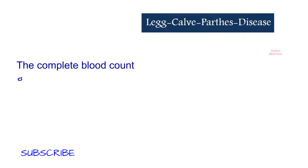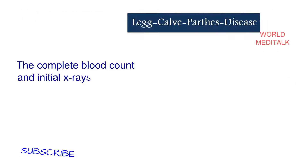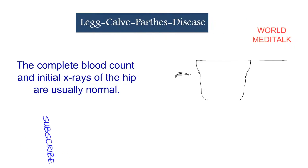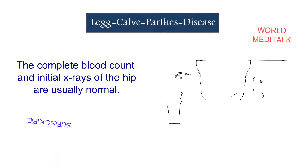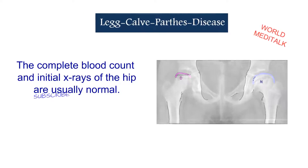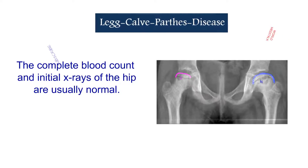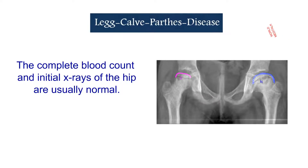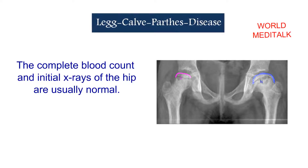The complete blood count and the initial X-ray of the hip are usually normal. Delayed X-ray changes will show a flattened appearance on the affected side, compared to the smooth curve of the femoral head on the normal side.